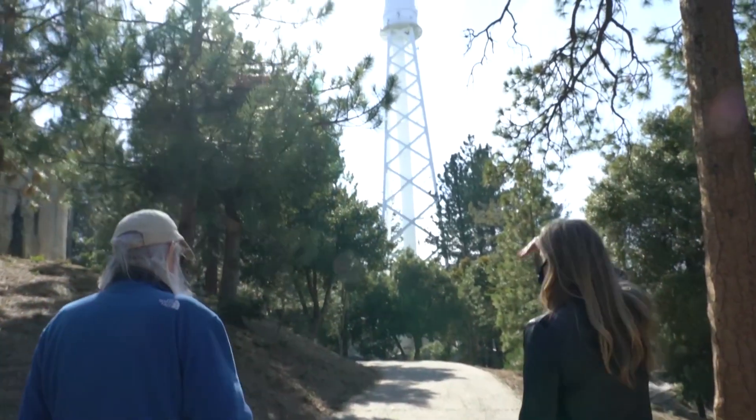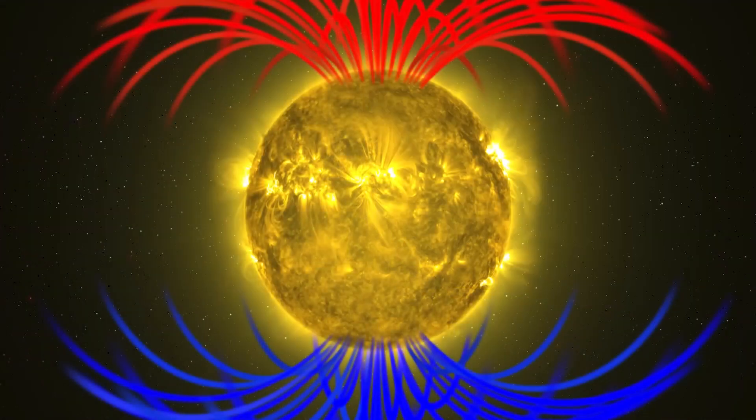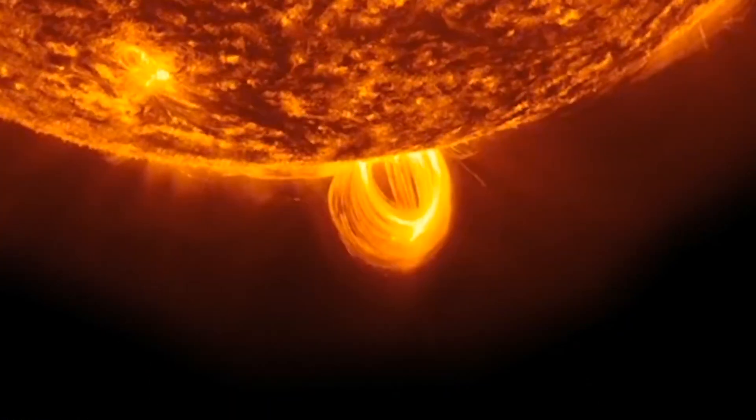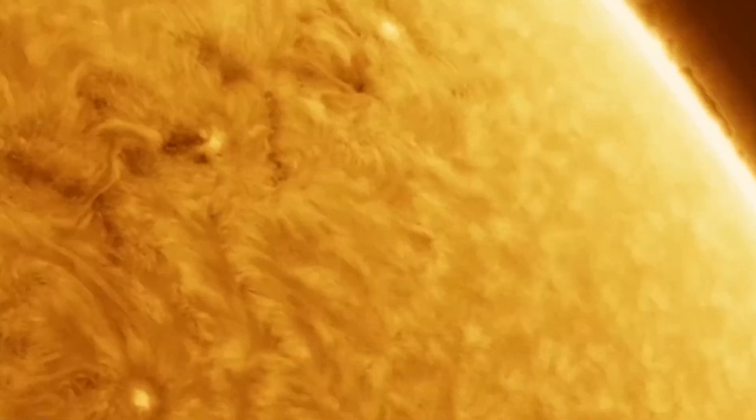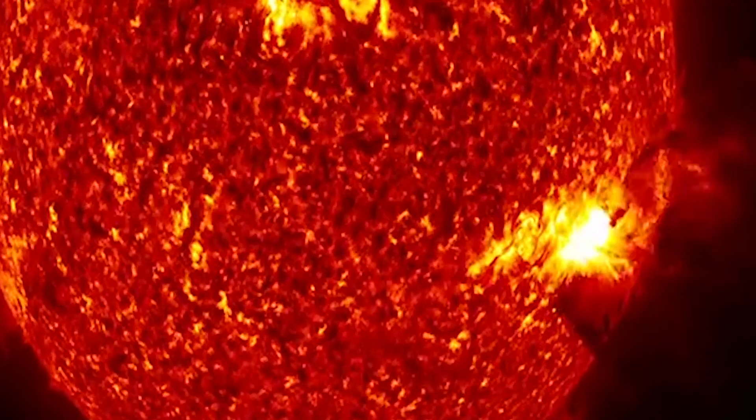The good news is that scientists are getting better at predicting these solar storms thanks to satellite data and advanced models. But even with all our technology, we can't prevent the sun's magnetic flip. We can only prepare for its consequences. So, what does all this mean for life here on Earth?